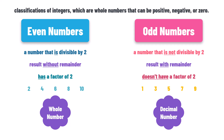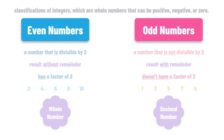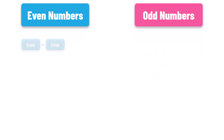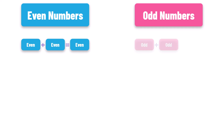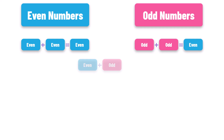Let's check some important properties of even and odd numbers. If you add two even numbers, the result is always an even number. If you add two odd numbers, the result is always an even number. If you add an even number and an odd number, the result is always an odd number.